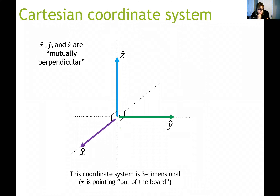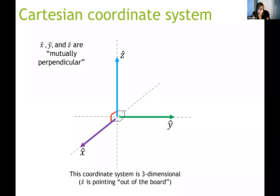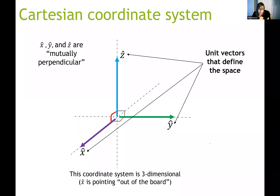All three unit vectors are perpendicular to each other. X-hat is perpendicular to y-hat, y-hat is perpendicular to z-hat, and z-hat is perpendicular to x-hat. Each unit vector is perpendicular to both of the other unit vectors — that's very important. These unit vectors define the three dimensions of space.